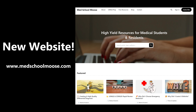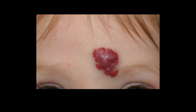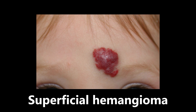I will leave a link in the bio, so be sure to check that out. Now let's get started with these high yield images. Starting off with a rash on the forehead of a child — what we're looking at is a superficial hemangioma. This is a benign tumor of blood vessels that usually occurs in children. It presents as a red papule or plaque, frequently on the face, and is generally asymptomatic. Sometimes these go away with time and sometimes they persist. So if you see a red papule or plaque like this, especially in a child, think superficial hemangioma.